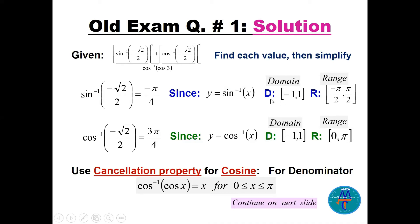For the sine inverse, the domain is negative 1 to 1, so that's fine. The range of sine inverse is negative π/2 to π/2, which is quadrant 1 or 4. Since the value is negative, we go to quadrant 4, so sine inverse of negative √2/2 equals negative π/4.